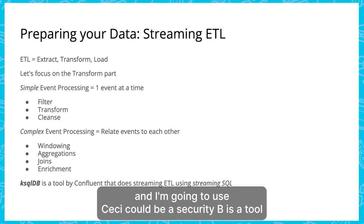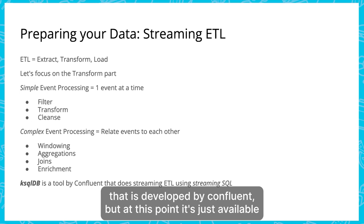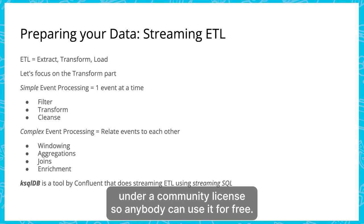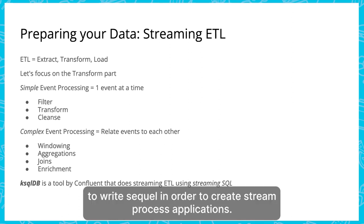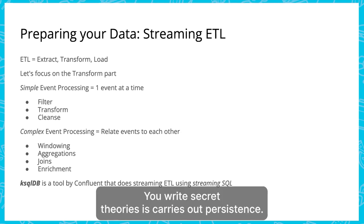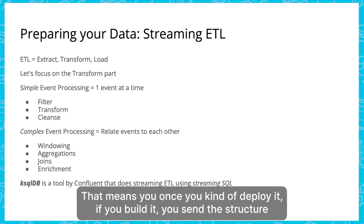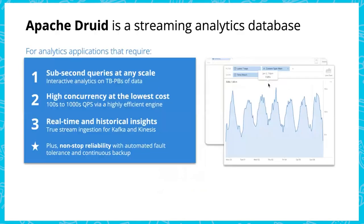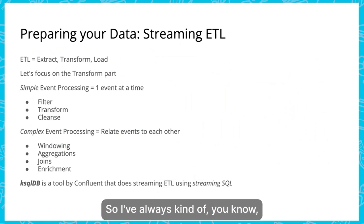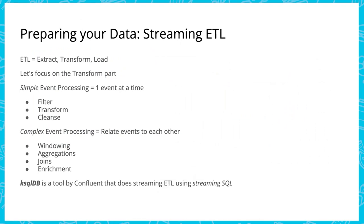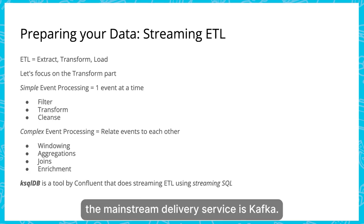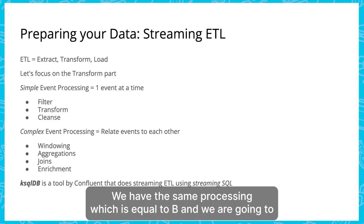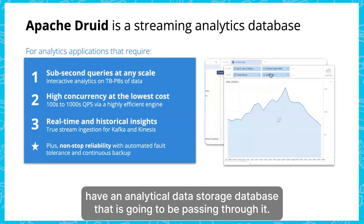I'm going to use KSQLDB for complex event processing today. KSQLDB is developed by Confluent, available under a community license — free for anyone. It lets you write SQL to create stream processor applications. You write SQL queries that are persistent: once deployed, the query continues to produce new output data as new input data arrives. The mainstream event delivery service is Kafka, stream processing is KSQLDB, and the analytical data store will be Apache Druid.